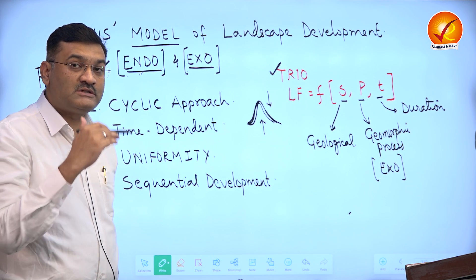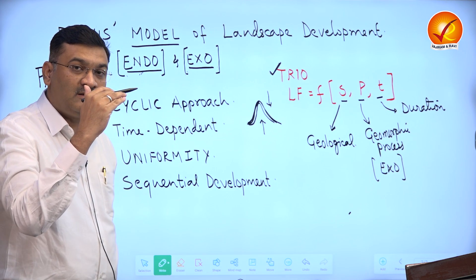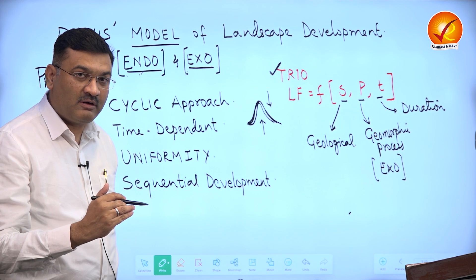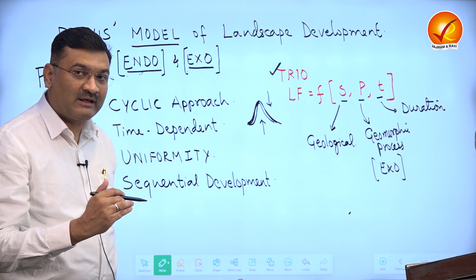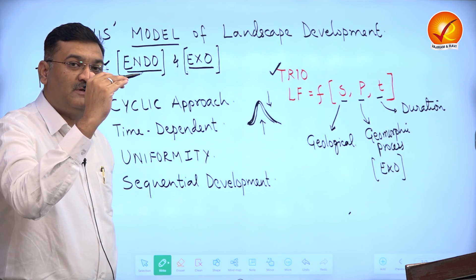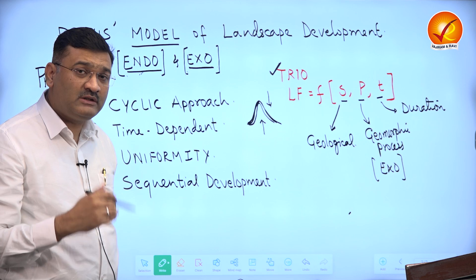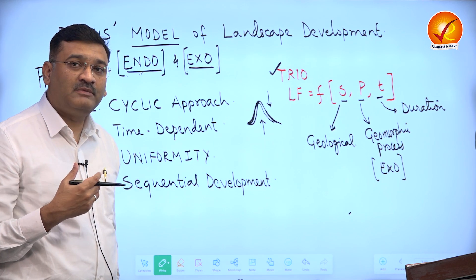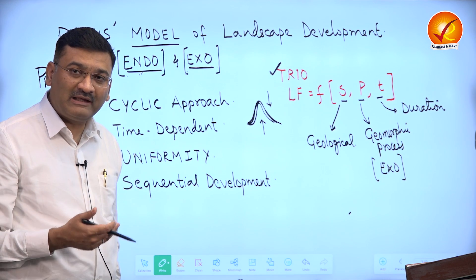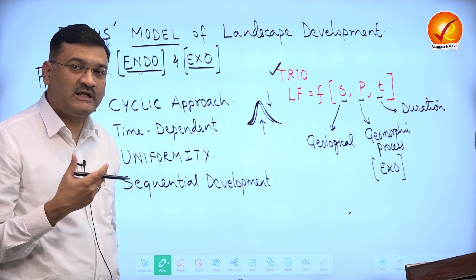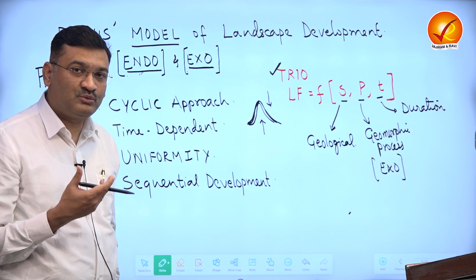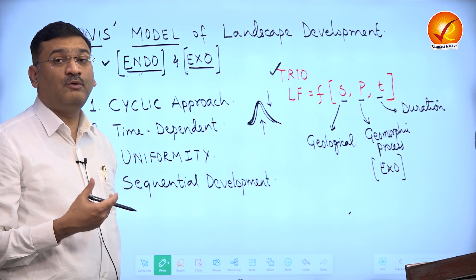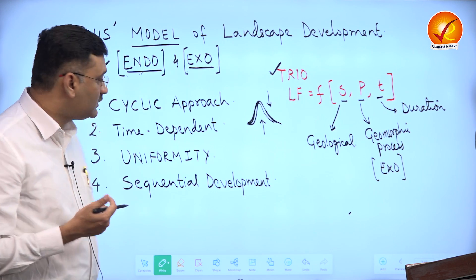Endogenetic forces cause upliftment and exogenetic forces bring the landform down, then there is upliftment again. In this way a landform can be monocyclic, meaning it has experienced one cycle, or it can be a polycyclic landform.